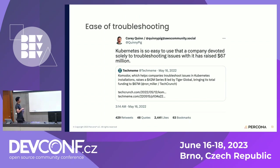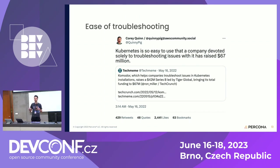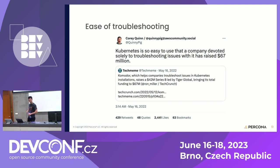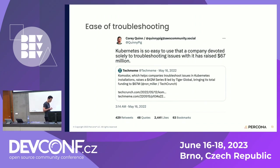People say Kubernetes is hard. I believe they are mostly talking about troubleshooting issues. We can say Kubernetes is very easy — unless something goes wrong. Why is troubleshooting Kubernetes hard? Because there are many moving parts and you don't have a solid ground. Everything is subject to change at any time because of that never-ending reconciliation loop.